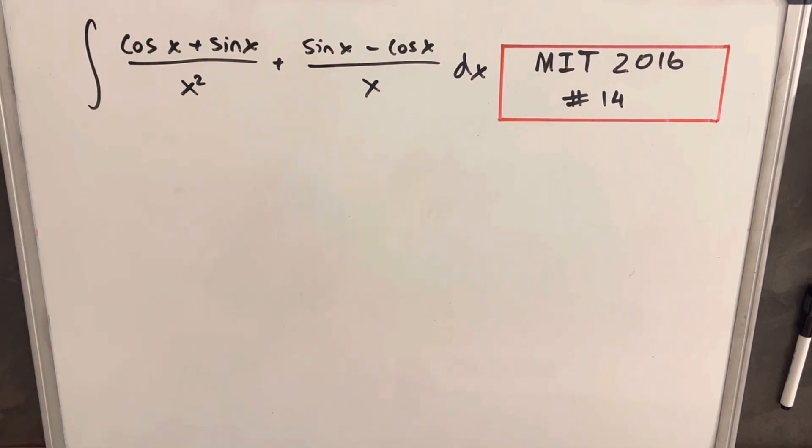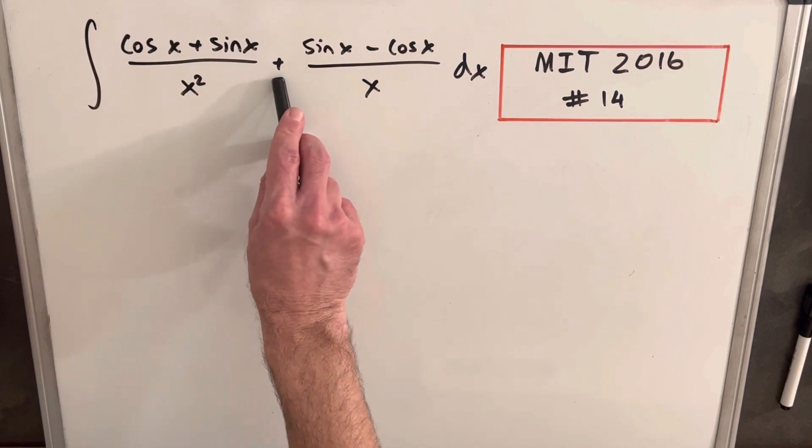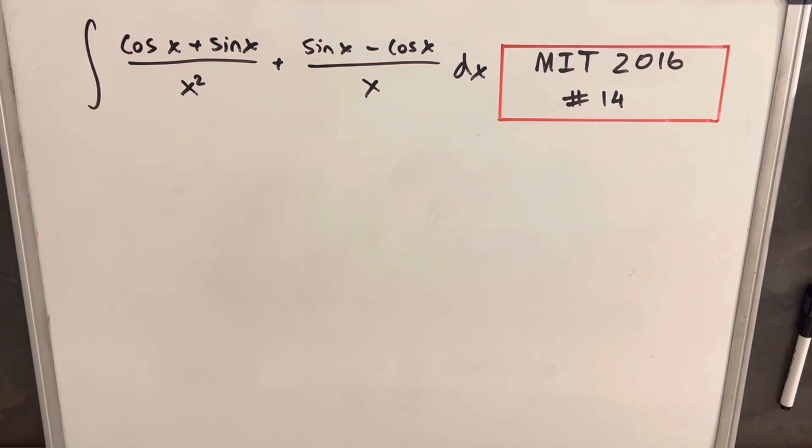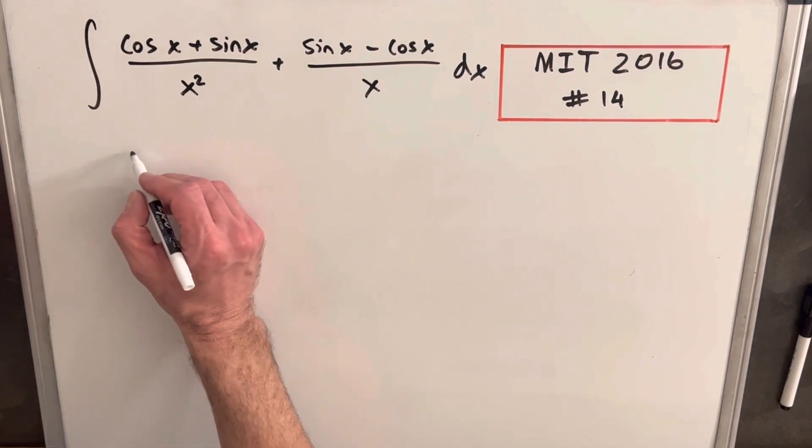We notice MIT has been doing a lot of these reverse product rule problems, and this looks like the same kind of thing where we're adding two things. They also have a similarity on both sides, and I notice this over here, we can write this as...